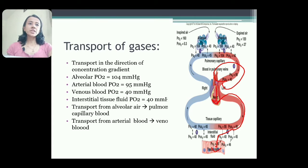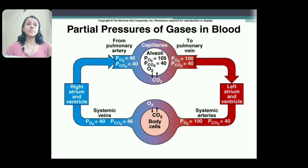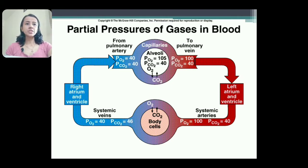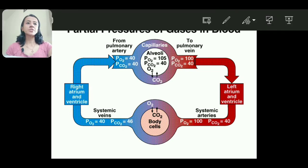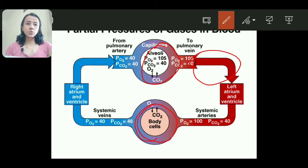You can see in this diagram the same thing is depicted — the partial pressure difference of oxygen. As we have discussed: alveolar partial pressure, then pulmonary capillary, then intracellular pressure and venous pressure.